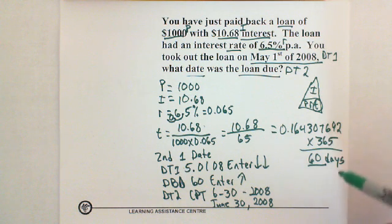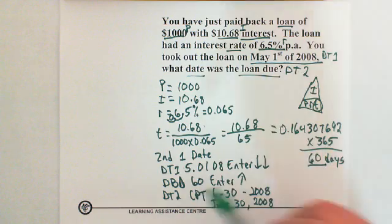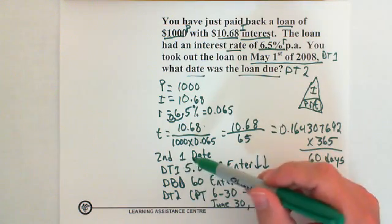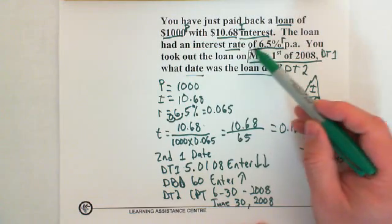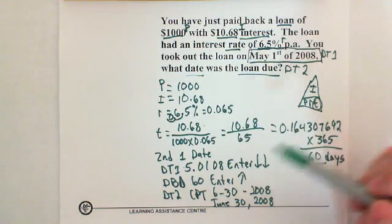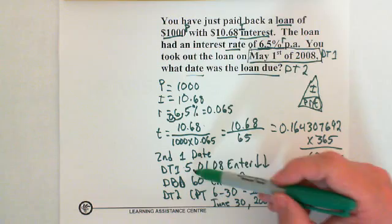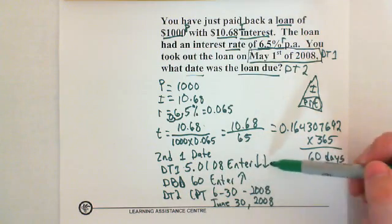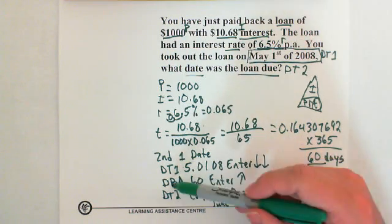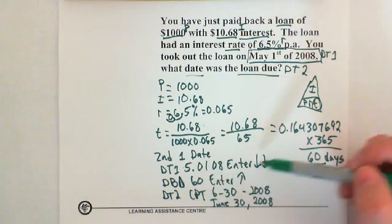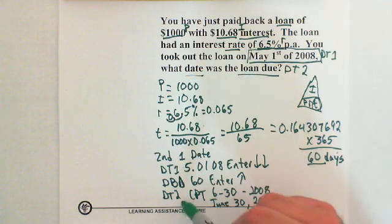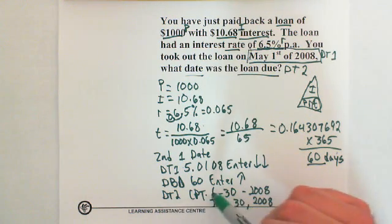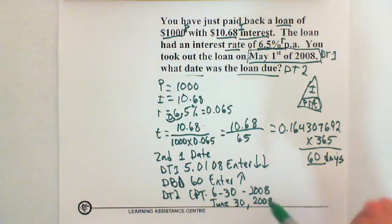And then we have to change this answer to days, so we times it by 365 to get 60 days. Then we go into our date function, plugged in the May 1st 2008, so May is the fifth month decimal 01 08 enter, down down, and then the days between dates we put in the 60 from our answer here and went up to date two and push compute, and we got June 30th 2008.